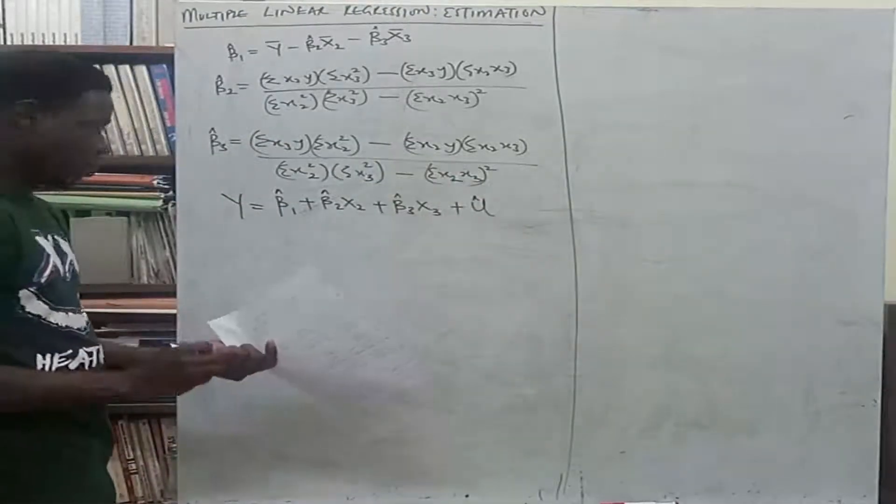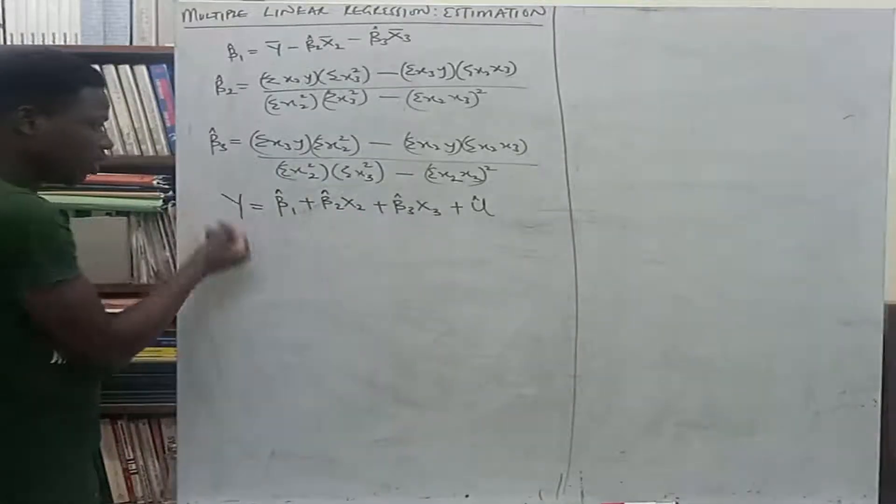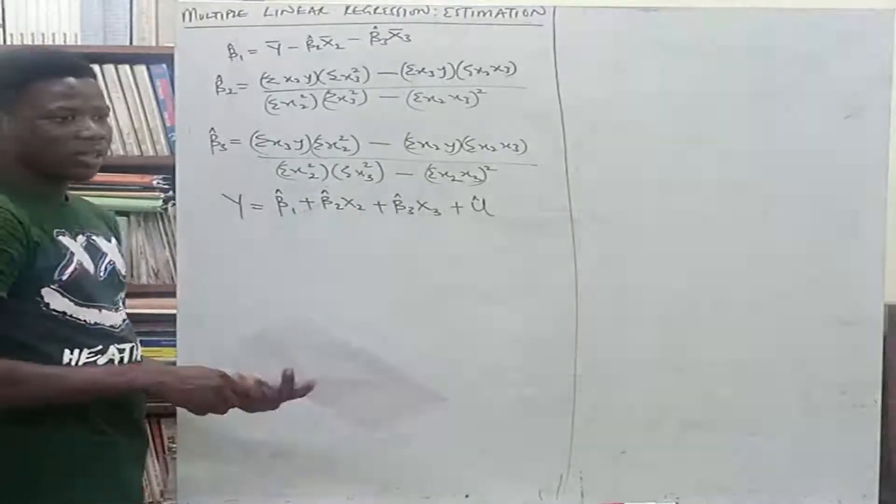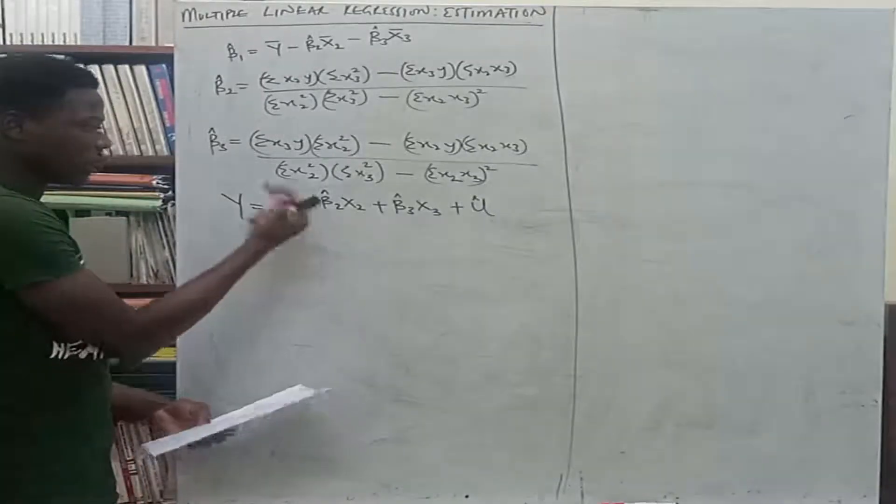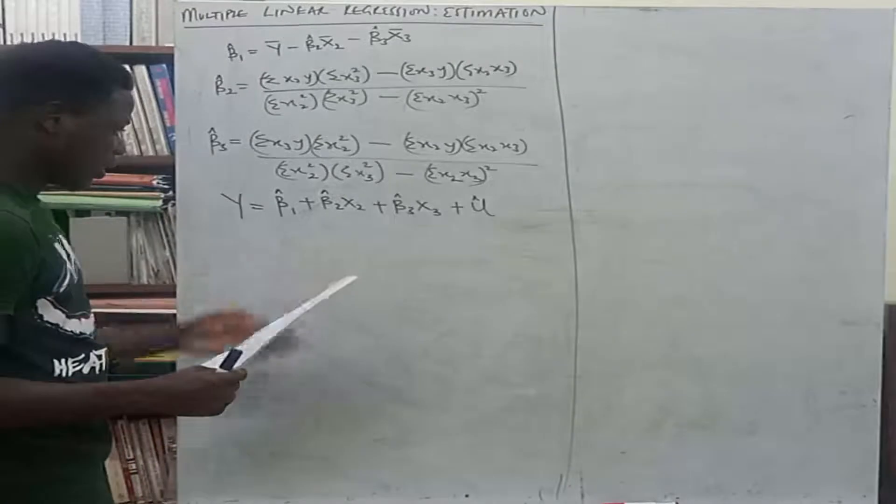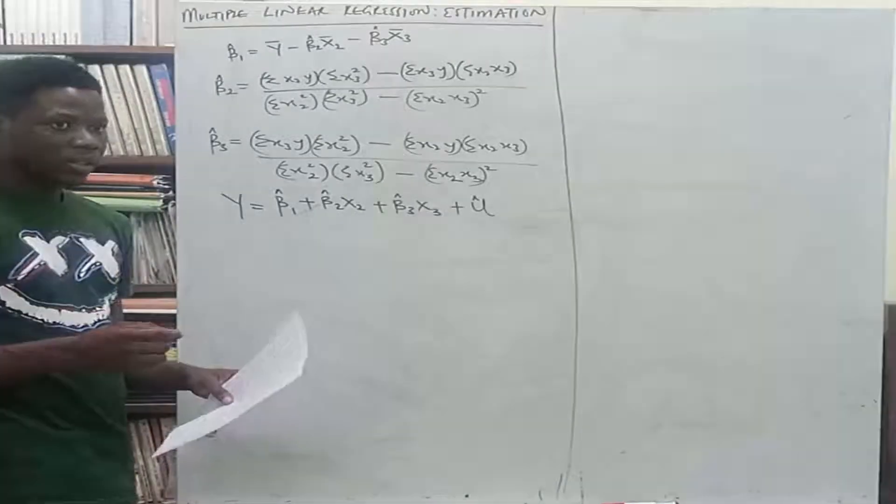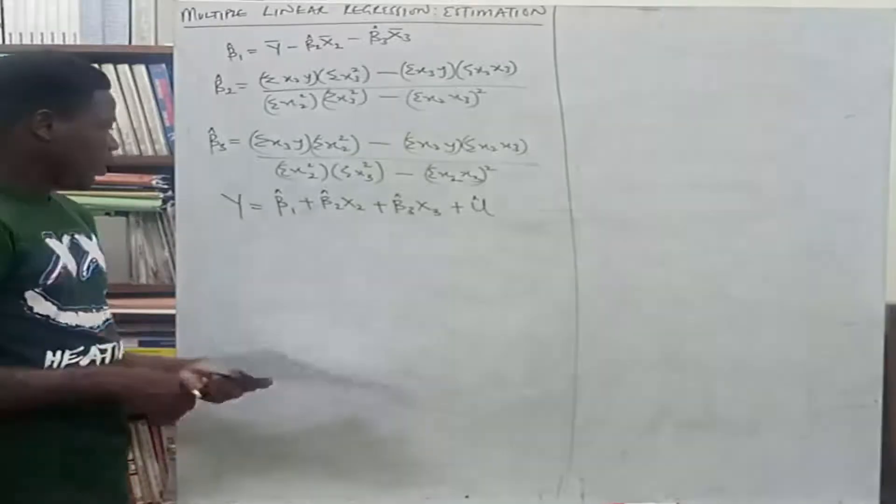So we have data on variables x2, x3, and y, and we'd like to estimate beta1, beta2, and beta3. So how do we go about this? That is what we want to look at in this class today.